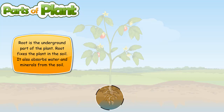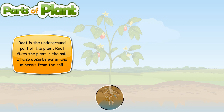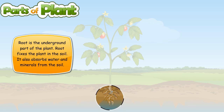The root is the underground part of the plant. The root fixes the plant in the soil. It also absorbs water and minerals from the soil.